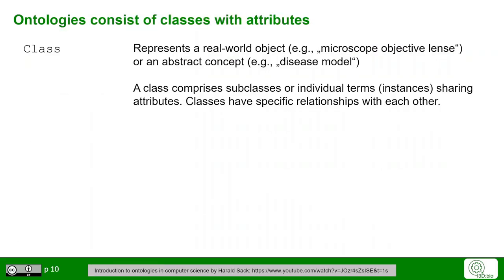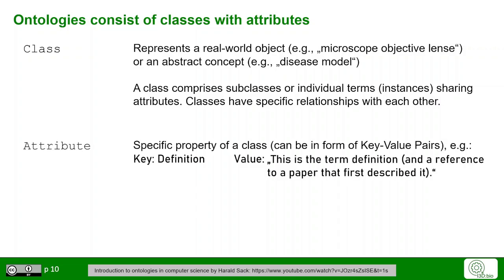What are ontology classes? A class represents a real-world object, for example a microscope objective lens, or an abstract concept, for example a disease model. Classes have different subclasses or individual terms — also called instances — that share those attributes. Classes also have specific relationships with each other, which could be partial overlap or even mutually exclusive. An attribute is a specific property of a class shared by the instances or subclasses of that class — for example, the definition is an attribute. Relationships define how classes are related to each other.